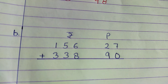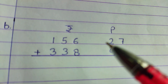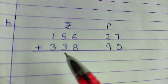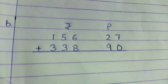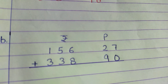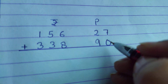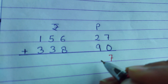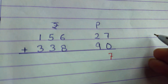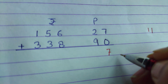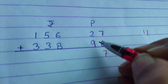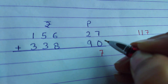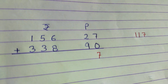Now let's move on to level 2 questions. Here the question is: Rupees 156 and 27 paise + Rupees 338 and 90 paise. Adding the paise column: 7 plus 0 is 7, and 2 plus 9 gives you 11 — so 27 plus 90 gives you 117. See the difference from the previous question!